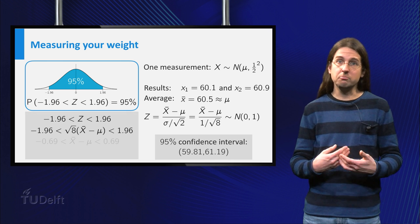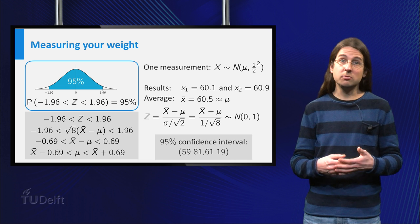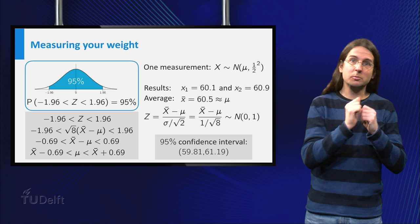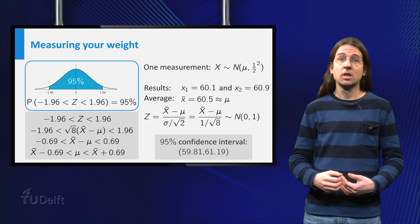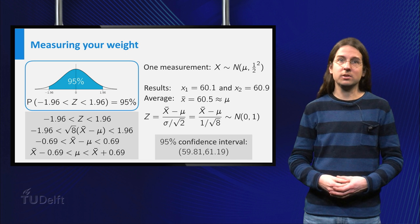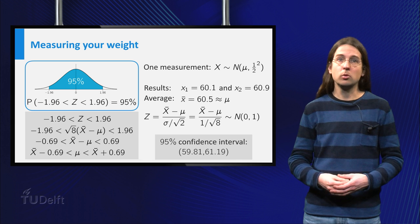This condition can be rewritten as saying that mu is between the average minus 0.69 and the average plus 0.69. Plugging in the outcome of the average of our measurements gives the 95% confidence interval for mu.